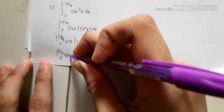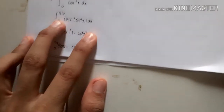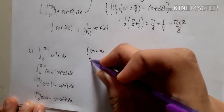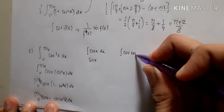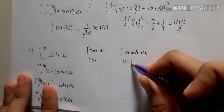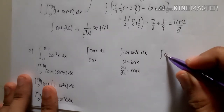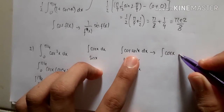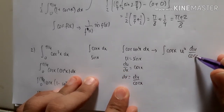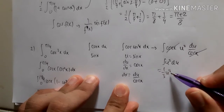After multiplying out, we integrate cos x minus cos x·sin²x dx from 0 to π/4. The integral of cos x is sin x. For the integral of cos x·sin²x, we use substitution: let u = sin x, so du = cos x dx. This transforms the integral to ∫u² du, giving (1/3)u³.